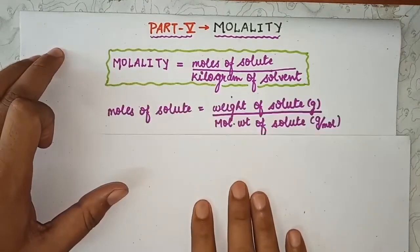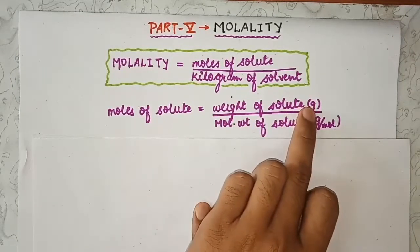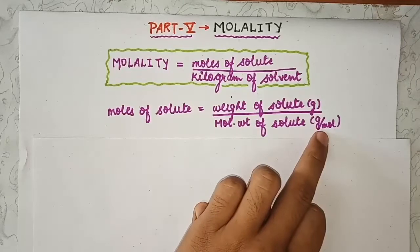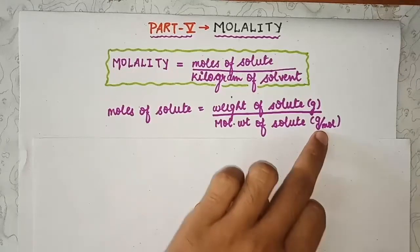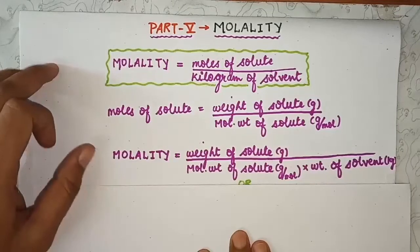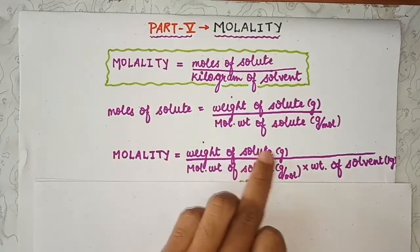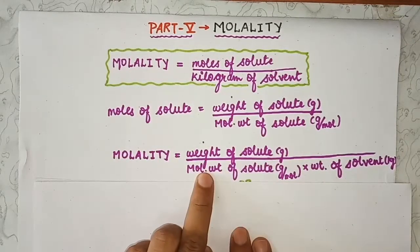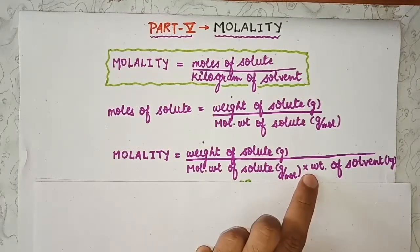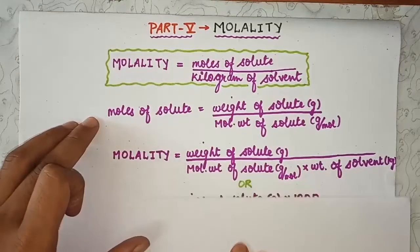Moles of solute is represented as weight of solute in grams divided by molecular weight of solute in grams per mole. So rewriting the above equation of molality: molality is equivalent to weight of solute in grams divided by molecular weight of solute in grams per mole, multiplied by weight of solvent in kilograms.